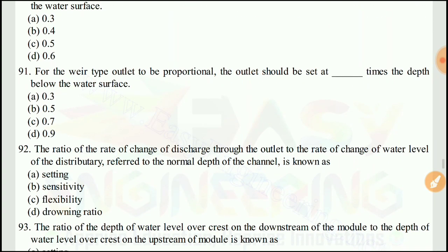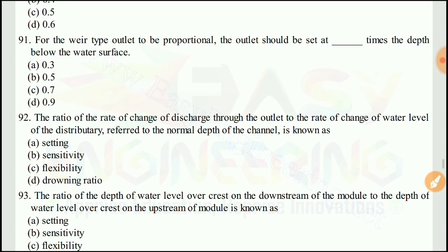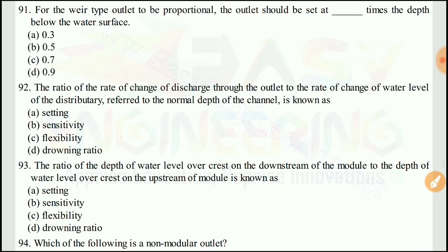Question 90: For a weir-type outlet to be proportional, the outlet should be set at 0.9 times the depth below the water surface. The right answer would be D.